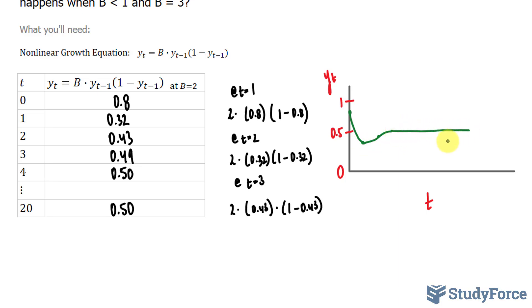And what this tells us about the population is that the population is stable. When you have a birth rate of 2, the population stabilizes, and that's a good thing.